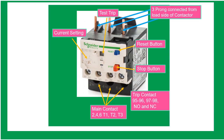One cause of overcurrent is bad bearings. For the overload relay current setting, you need to know the full load current and multiply it by 1.25, or 125%. The stop button is used to stop the motor.